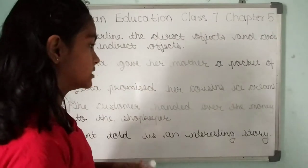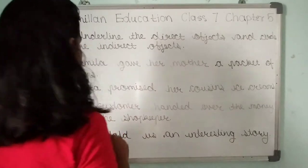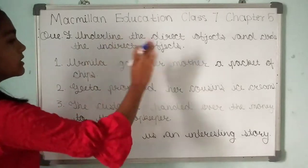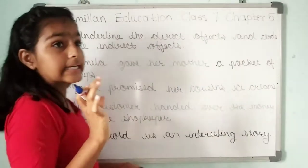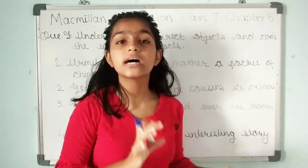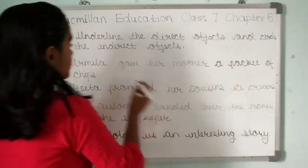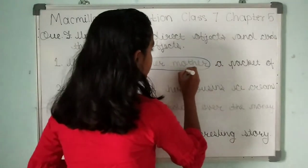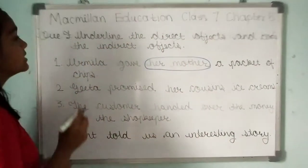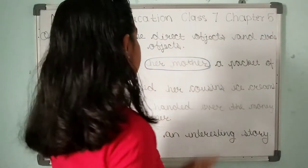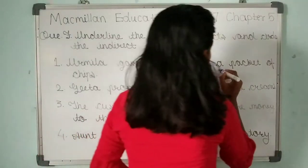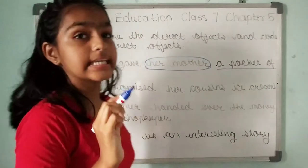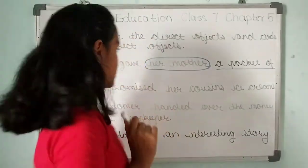Question one: 'Urmila gave her mother a packet of chips.' Indirect object means someone to whom something is given, so here 'her mother' is the indirect object. And 'a packet of chips' is the direct object — the name of something.